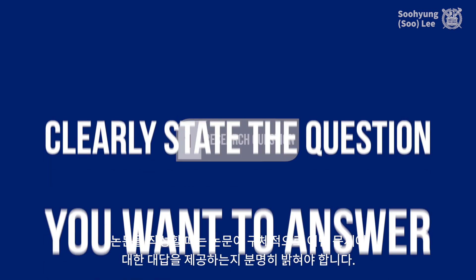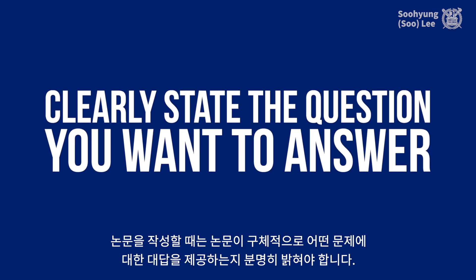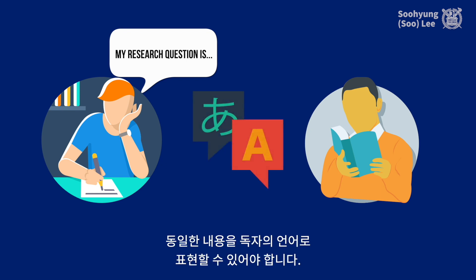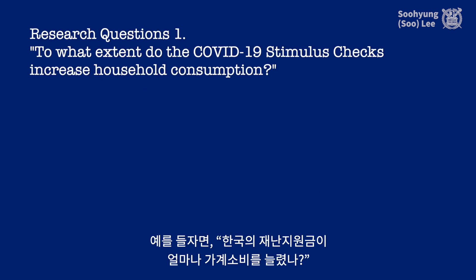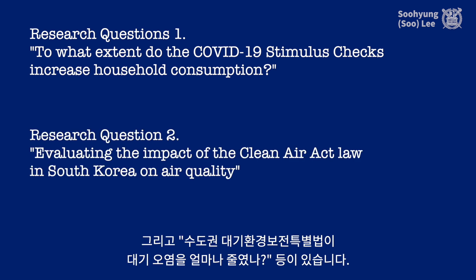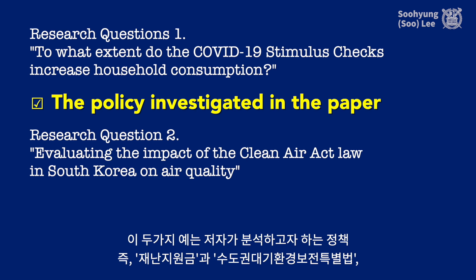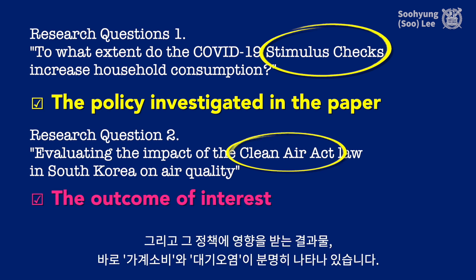When you write a paper, you should clearly state what question you are answering. By clearly, I mean your audience should understand what you said and be able to explain it to another person in their own language. An example would be: to what extent do the COVID-19 stimulus checks increase household consumption? Another example would be evaluating the impact of the Clean Air Act law in South Korea on air quality. These two examples explain the policies the writers investigated, namely stimulus checks and Clean Air Act, and also the outcomes they care about, namely household consumption and air quality.